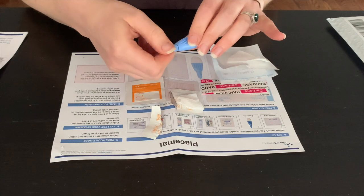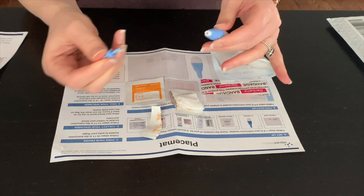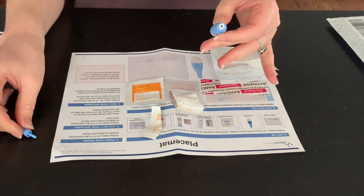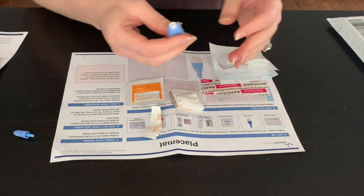Choose an area on the side of your finger to poke. If you poke the pad of your finger you may have a harder time getting blood to flow. It is recommended that you choose the side of your finger.